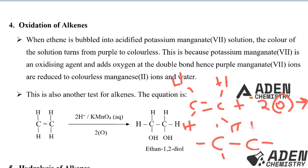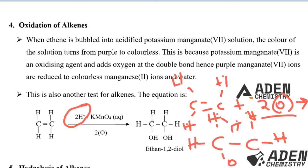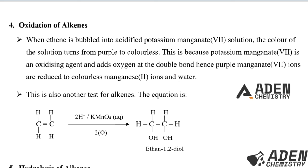After the double bond breaks, we are left with single bonds. Ethene initially had four hydrogen atoms — placed as one, two, three, four. We then place one oxygen atom on each carbon. From the acidified potassium manganate(VII) we used two moles of hydrogen ions, so we place one hydrogen on each oxygen. The product formed is called ethane-1,2-diol.